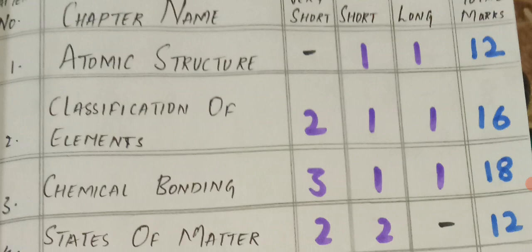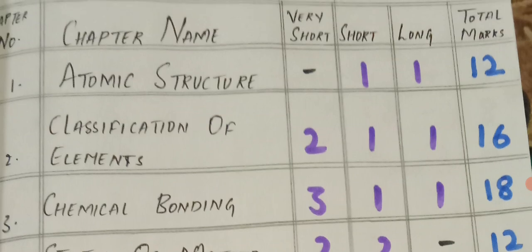First is atomic structure. According to the latest model paper released by the Board of Intermediate, one SAQ and one LEQ will come from atomic structure.